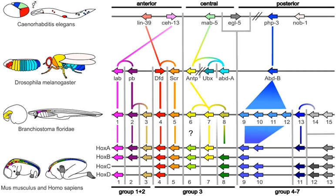Evolutionary developmental biology is a field of biological research that compares the developmental processes of different organisms to infer the ancestral relationships between them and how developmental processes evolved. The field grew from 19th century beginnings, where embryology faced a mystery: zoologists did not know how embryonic development was controlled at the molecular level. Charles Darwin noted that having similar embryos implied common ancestry, but little progress was made until the 1970s.